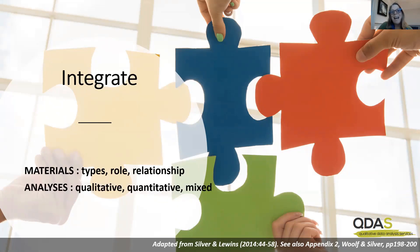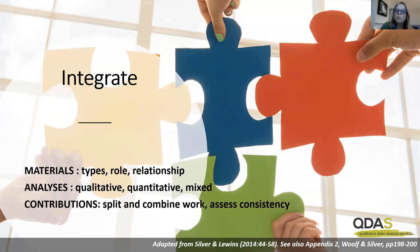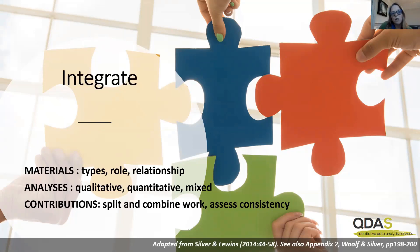Secondly, we need to think about the analyses. Are we taking a purely qualitative approach to analysing our qualitative materials? Or are we quantifying in some way? Or indeed mixing elements of different analytic approaches throughout the different stages of our work. Finally, if we're working in teams, we need to think about integrating the contributions of multiple team members — how we split and combine our work, and how we assess consistency. Consistency is relevant even if you're working as an individual, though it then refers to consistency throughout an analysis rather than between team members.